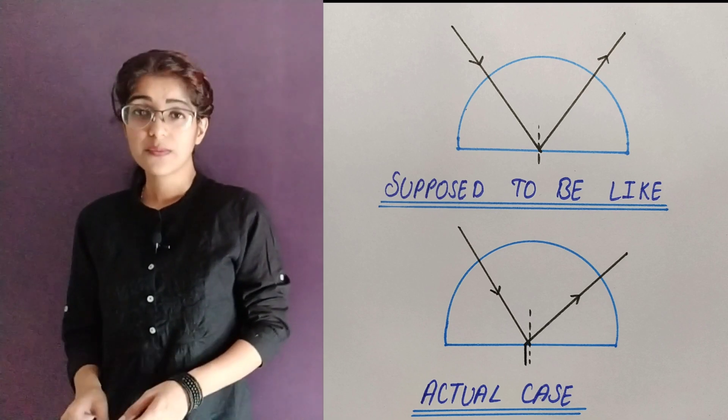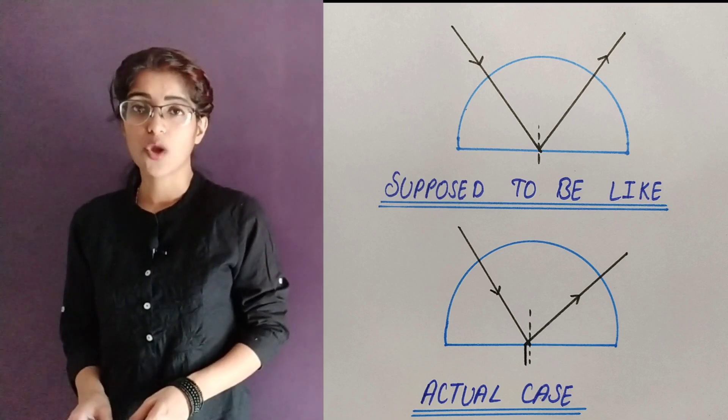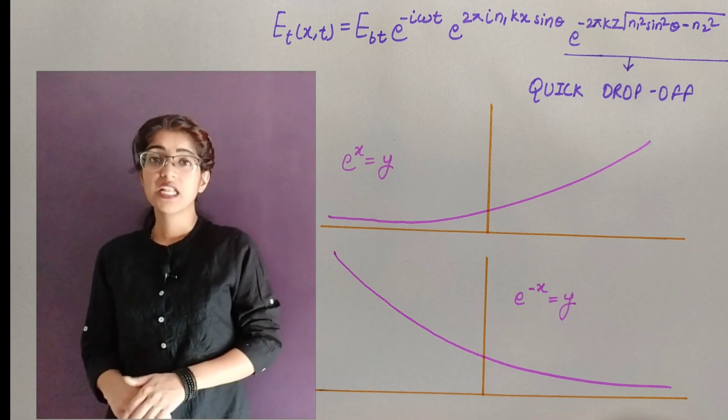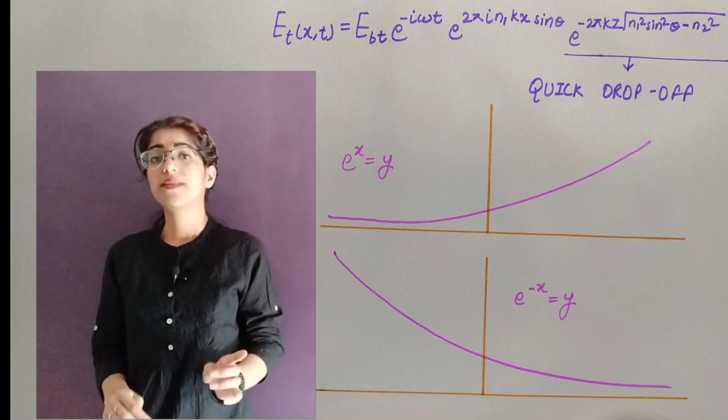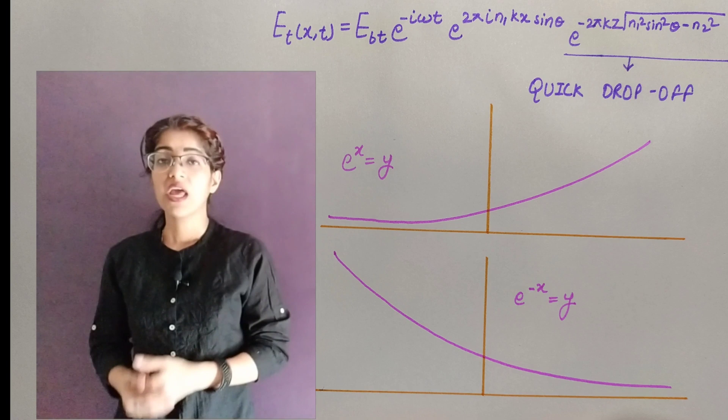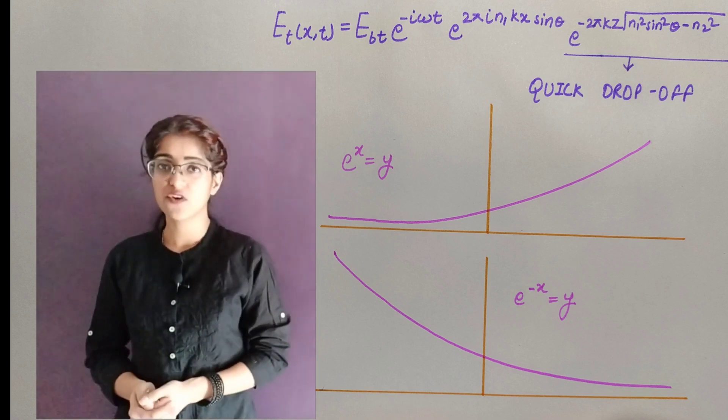Instead of being an abrupt drop-off, there is a quick drop-off which we call the evanescent wave. If you take a look at the corresponding equation, then the exponential term represents the evanescent wave. And the graph for e raised to the power negative of x is something like this. This decay lasts for a very few wavelengths and it is extremely difficult to detect it. But if we place another such medium sufficiently close enough to the boundary of first medium, then in some cases the evanescent wave does not decay completely and enters in the second medium. It bends further and continues to move in the ahead direction. And this is what we call frustrated total internal reflection.